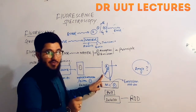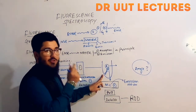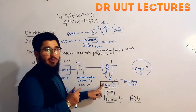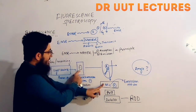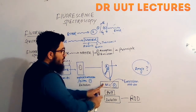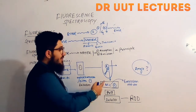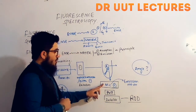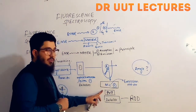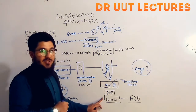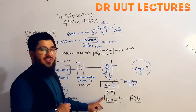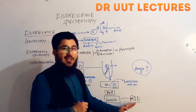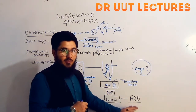Just after the excitation monochromator, we have a sample-holding device known as a cuvette, which holds the sample. Below the cuvette we have a second monochromator — this one is called the emission monochromator. Just after that we have the photomultiplier tube, which serves as the detector. Finally, we have the readout device, which gives us the information from the spectroscopy.